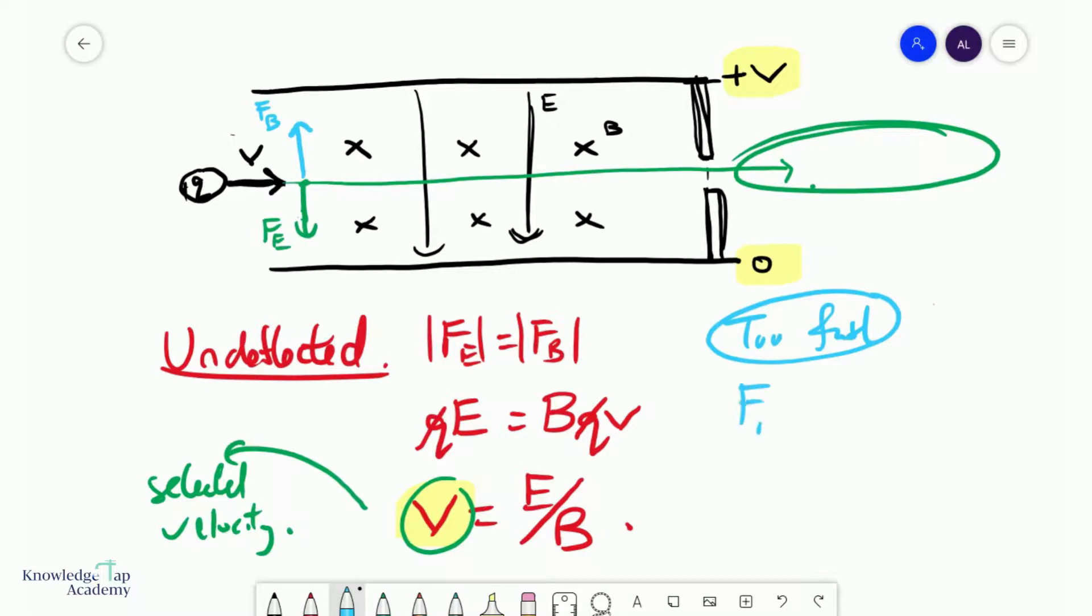And so if v is greater than the selected velocity, then FB will be greater in magnitude than FE, and you will start to deflect in the direction of FB. So you'll end up doing something like that, and you may not be able to emerge from the velocity selector.